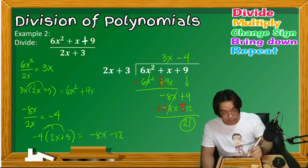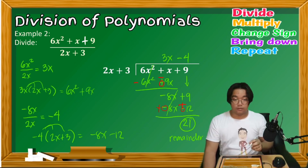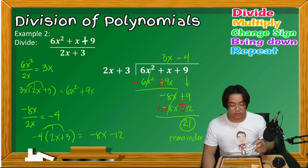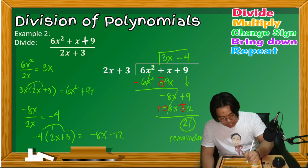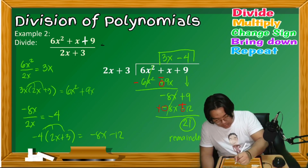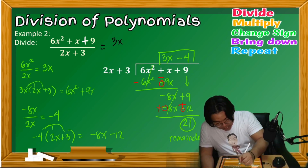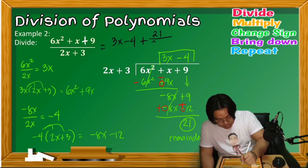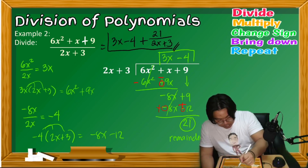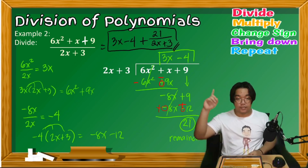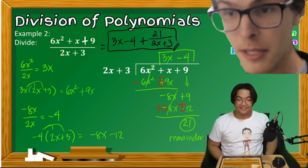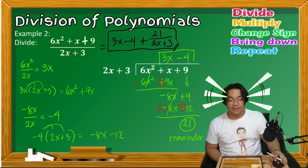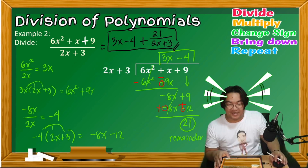The 21 is the remainder. We write the quotient as 3x − 4 plus the remainder 21 over the divisor 2x + 3. Always remember that when writing a polynomial quotient with a remainder, you include the remainder over the divisor.